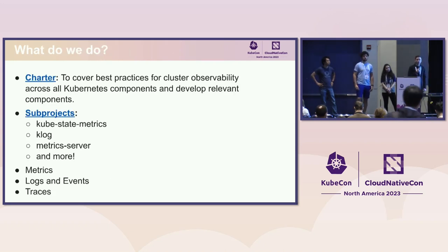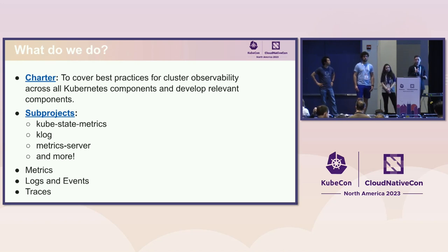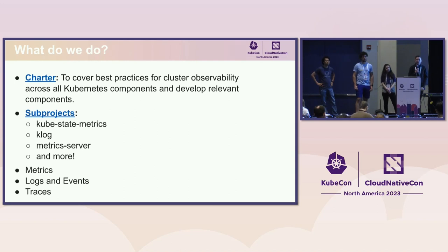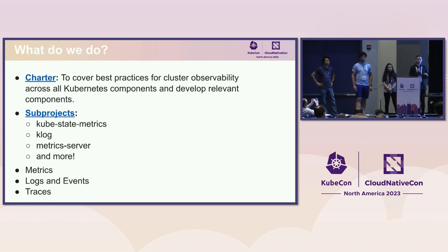So what do we do? For those not familiar with the Kubernetes structure and project, it is divided into groups of interests, each covering a specific area. In our case, our charter is to cover best practices for cluster observability across all Kubernetes components and to create new components to cover some of the gaps we're seeing.